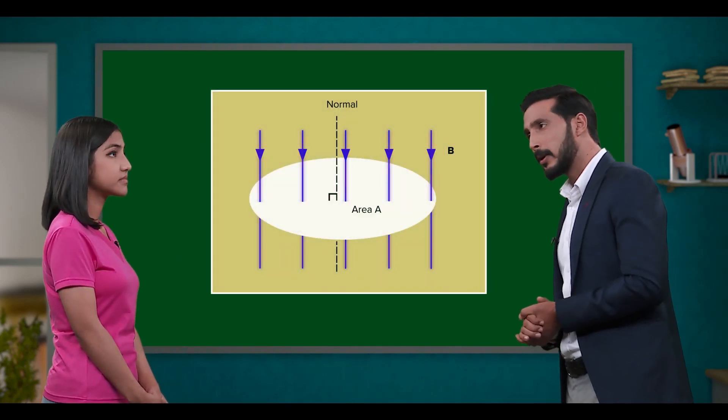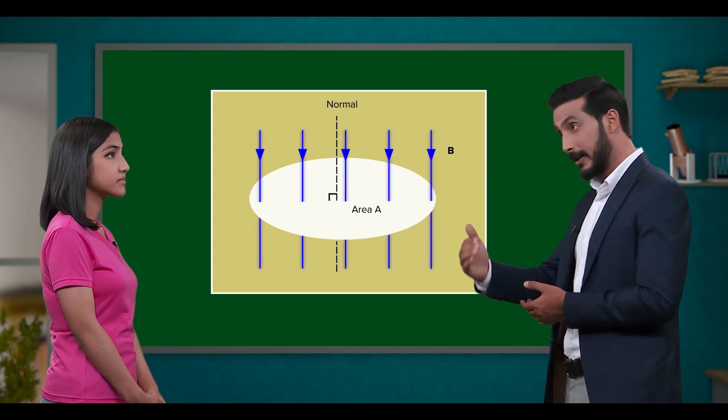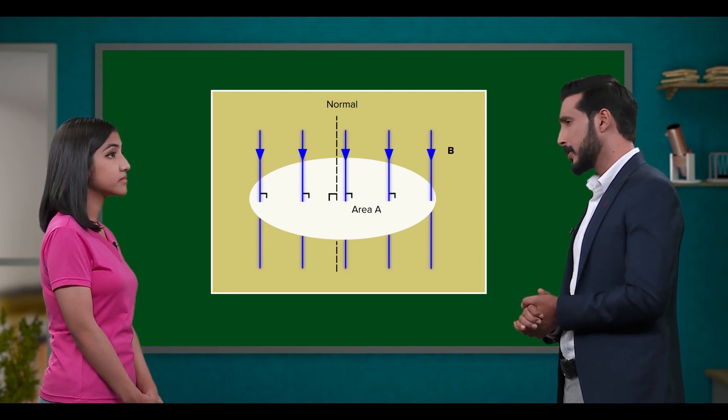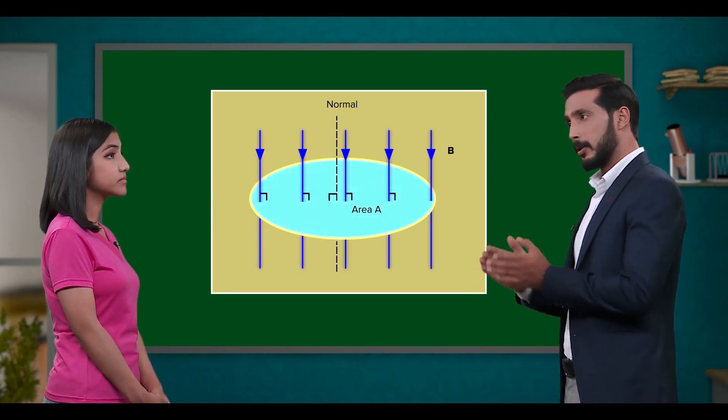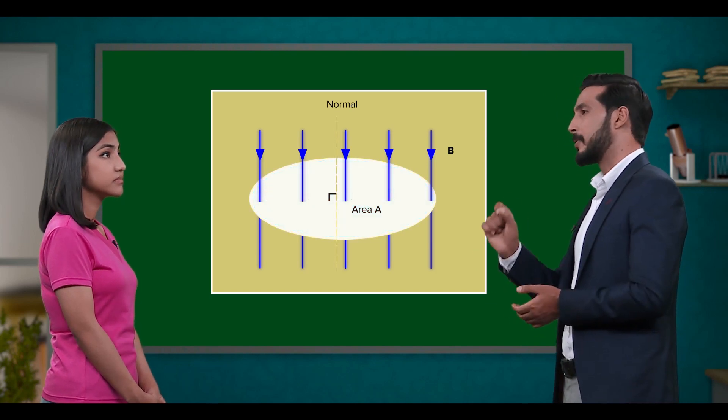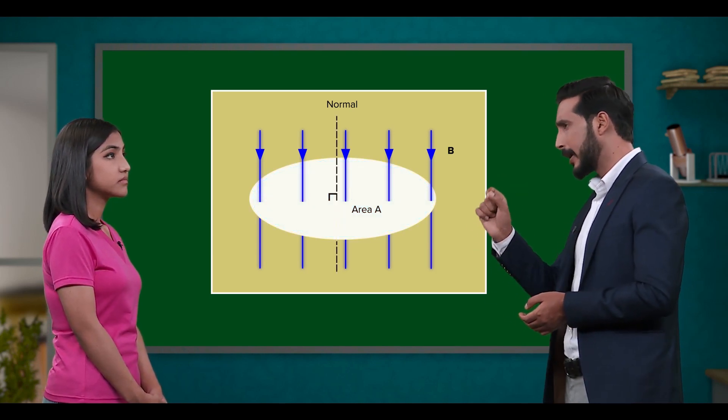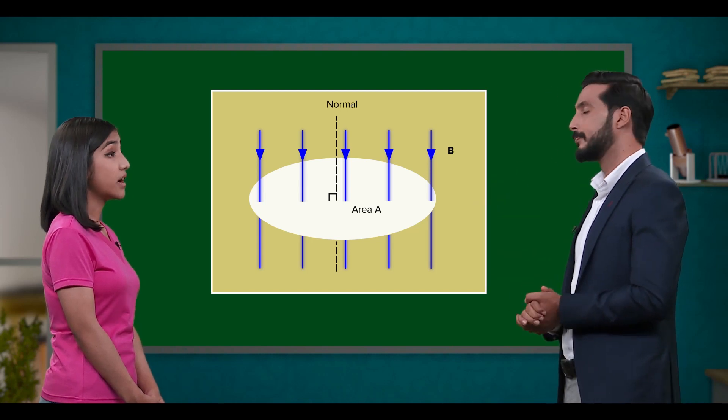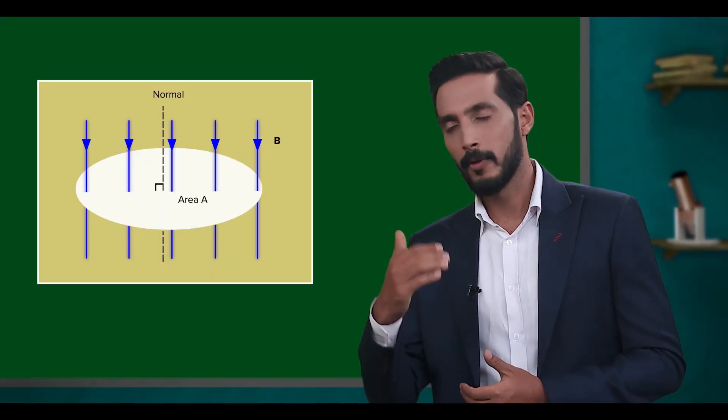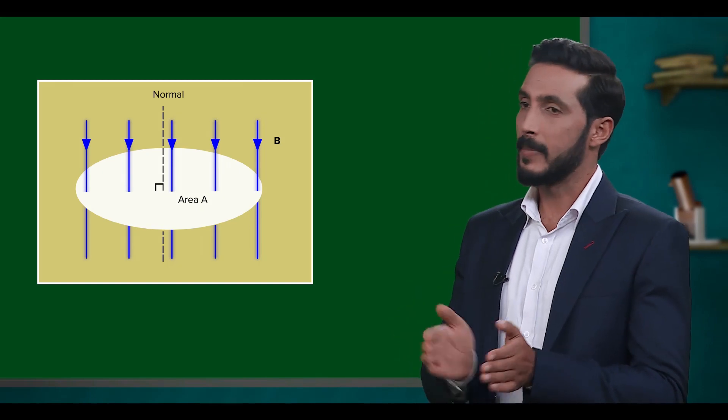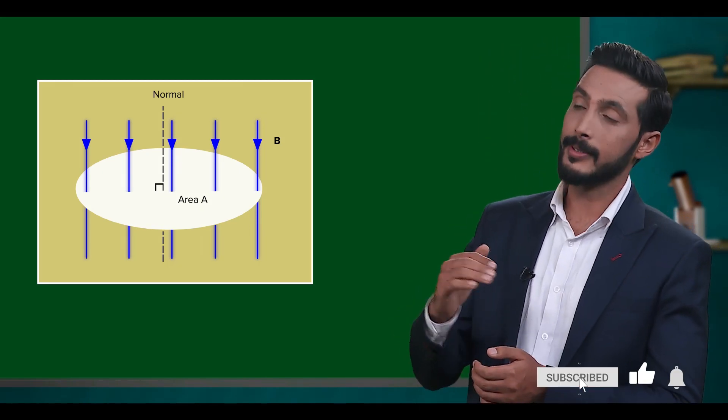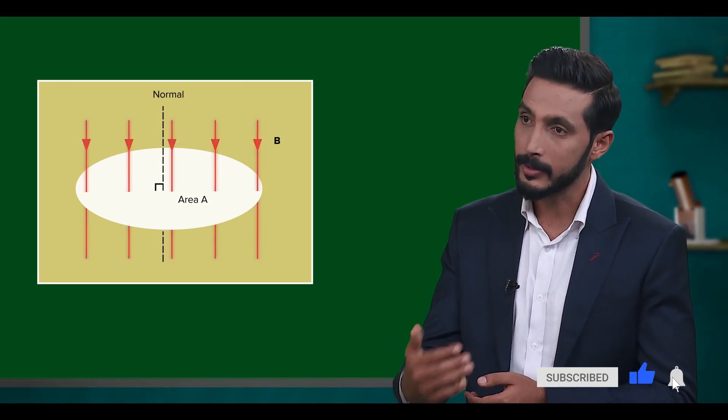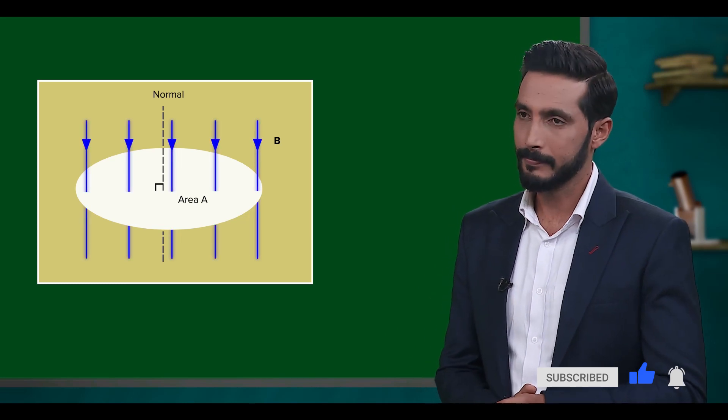Here, the blue lines represent the magnetic field lines and they are perpendicular to the given area. The dotted black lines represent the vector that's perpendicular to the area or normal. Ah, I see. Now, from the definition, the quantity of magnetic flux is actually telling us how much of these field lines contribute to the magnetic flux.